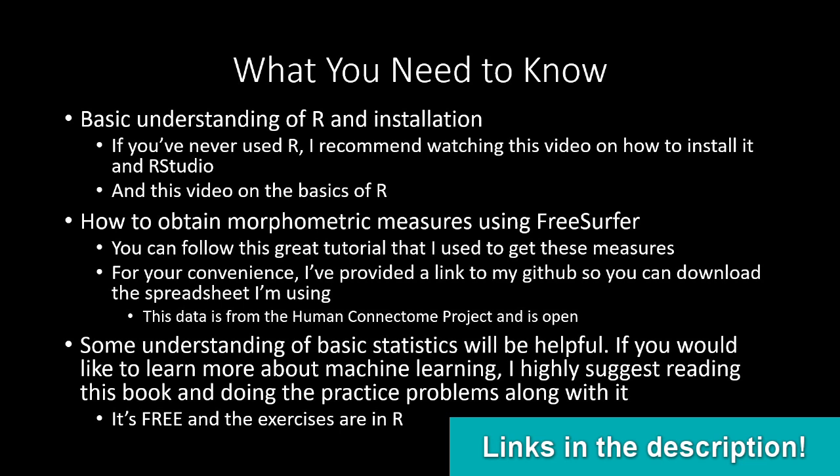This data is from the Human Connectome Project and it is open access — the link is in the description below. I also suggest having some background in statistics. Machine learning relies on a lot of statistical concepts, some of which may be advanced. If you'd like to learn more about machine learning statistics, I highly suggest reading the linked book and doing the problems along with it. They're all in R and the book is free — highly recommended if you're not familiar with statistical concepts or just need a good refresher.